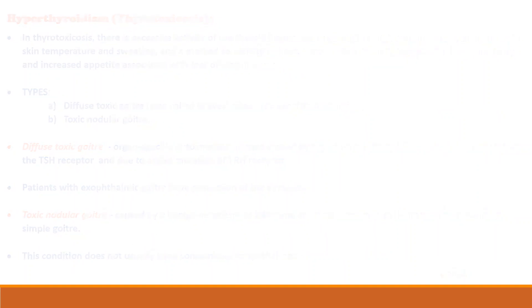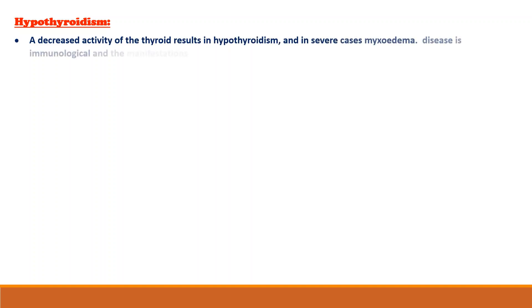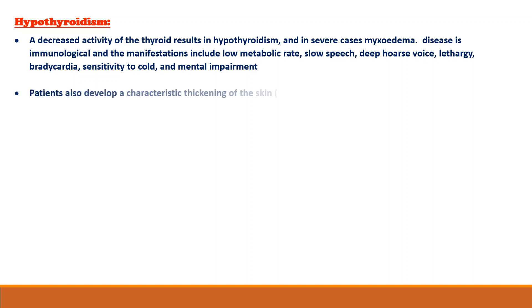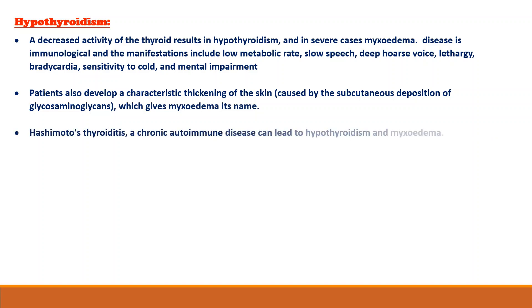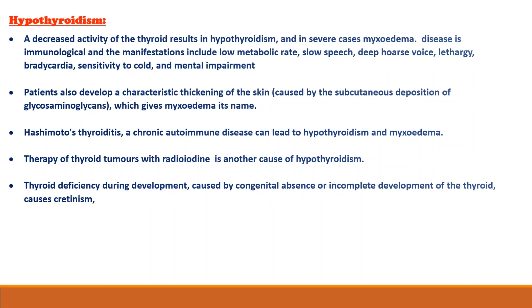If dietary deficiency of iodine is prolonged, it may lead to a rise in plasma TRH and eventually an increase in the size of the gland, a condition known as simple or non-toxic goiter. A decreased activity of the thyroid results in hypothyroidism and in severe cases, myxedema. The disease is immunological and manifestations include low metabolic rate, slow speech, deep hoarse voice, lethargy, bradycardia, sensitivity to cold, and mental impairment. Patients also develop a characteristic thickening of the skin. Therapy of thyroid tumors with radioiodine is another cause of hypothyroidism. Thyroid deficiency during development, caused by congenital absence or incomplete development of the thyroid, causes cretinism.